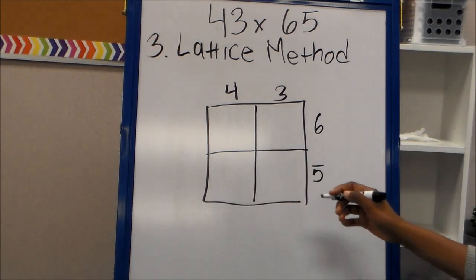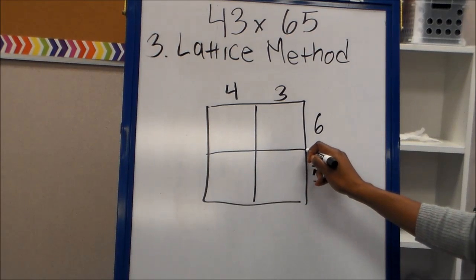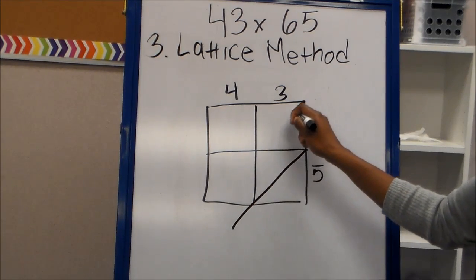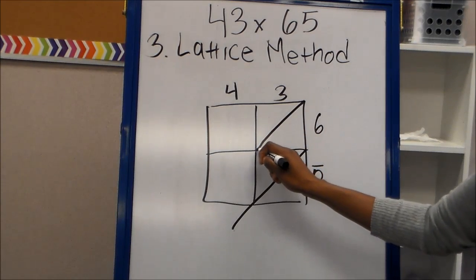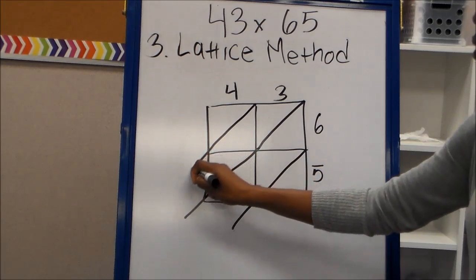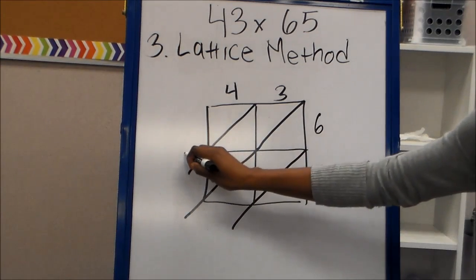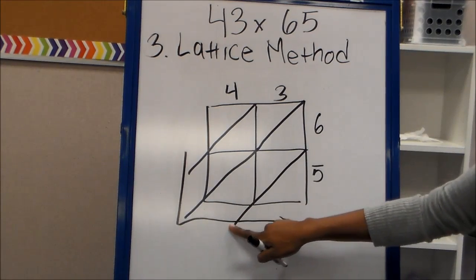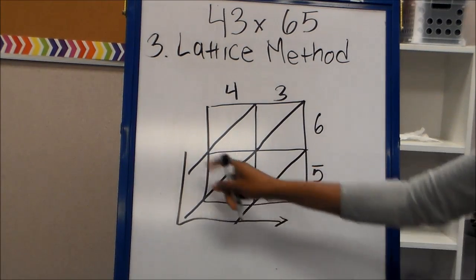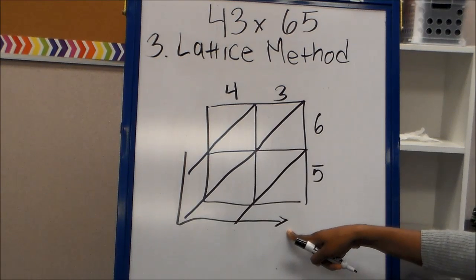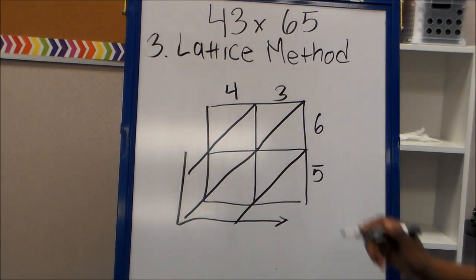After we draw our array, we're going to split our boxes in a diagonal fashion from right to left. Right to left. Right to left. And right to left. I extended my lines so that when I include my answer, I will have a place to put them. Also, the arrow helps me read my number when I'm finished.